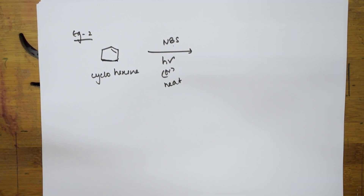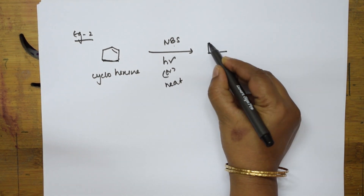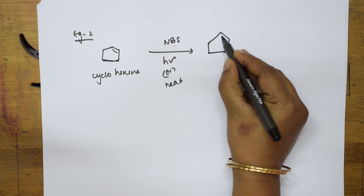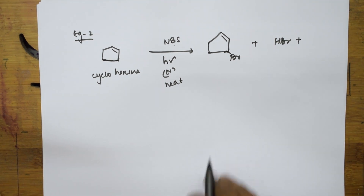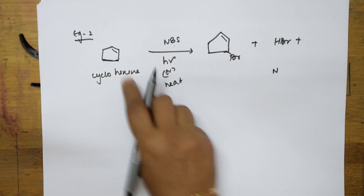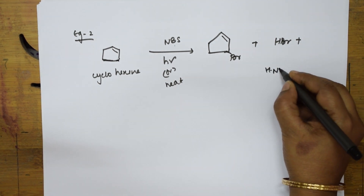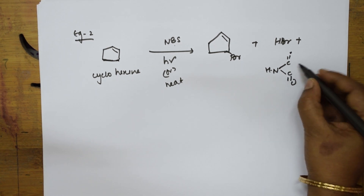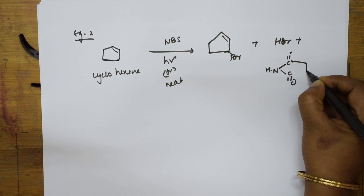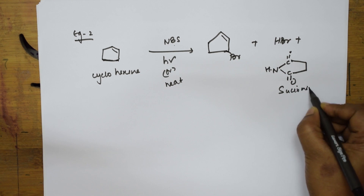We will see the mechanism and then you will understand why the bromine adds one carbon away from the double bond. The product of cyclohexene with NBS is the ring with the double bond retained and bromine added at the allylic position. HBr is released, and succinimide comes out as a byproduct — the H goes and adds to the nitrogen of NBS to give succinimide.